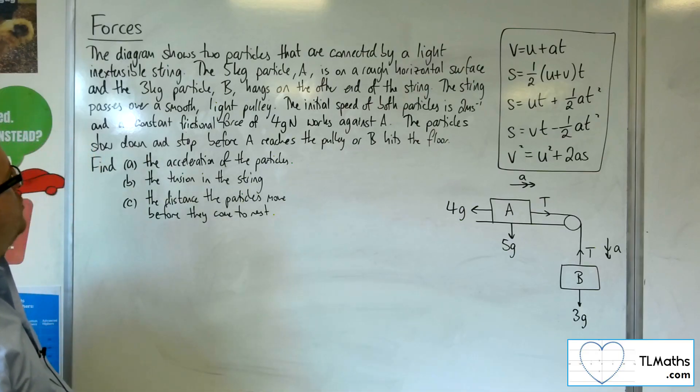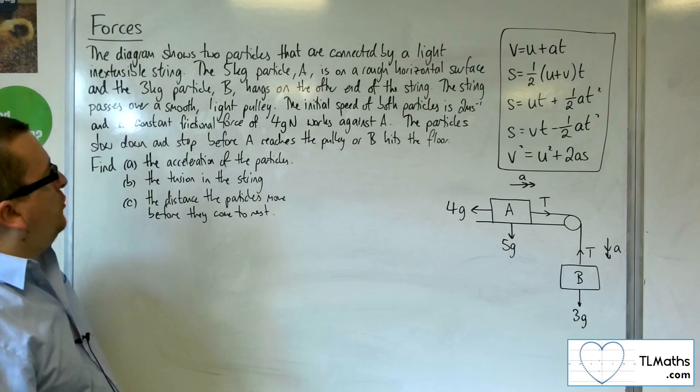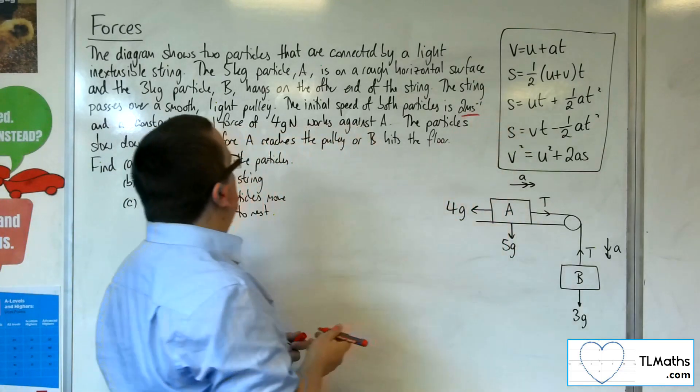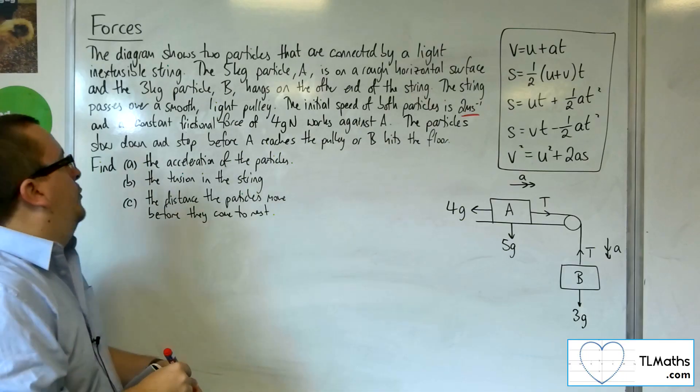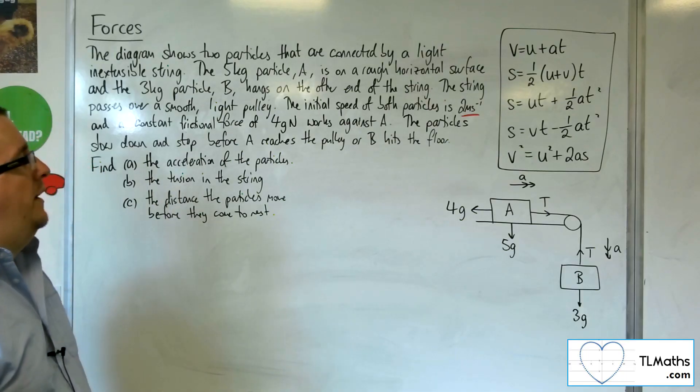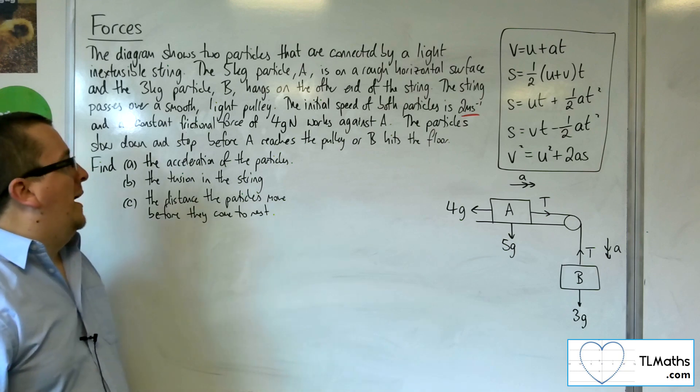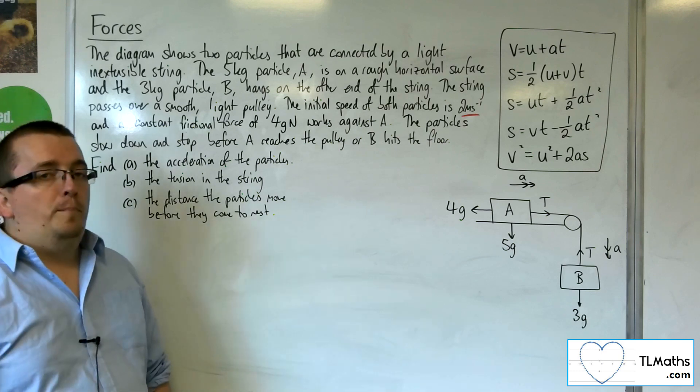The string passes over a smooth light pulley. The initial speed of both particles is 2 metres per second, and a constant frictional force of 4G Newtons works against A. The particles slow down and stop before A reaches the pulley or B hits the floor.